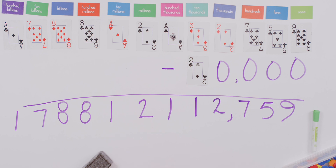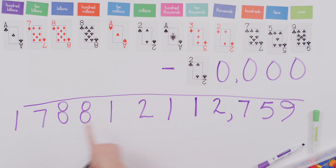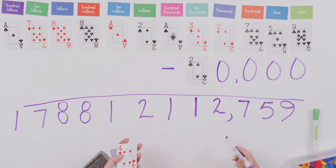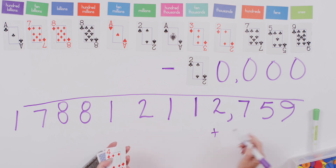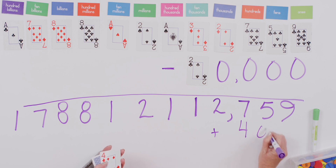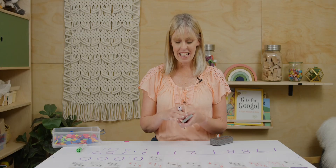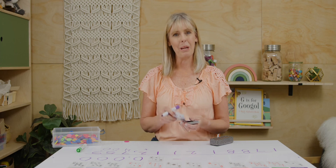Now I'm gonna play this game a couple more times. This next time I'm gonna add. I'm gonna pick another value and add — I'll choose maybe hundreds. I'm gonna turn it over and it's a four, so now I'm gonna add four hundred. Practice a little bit and then we will jump into our lesson.